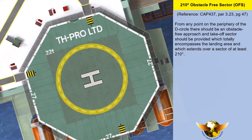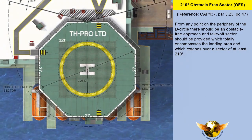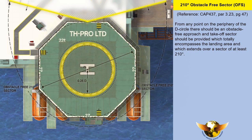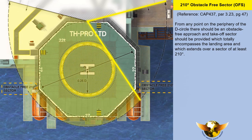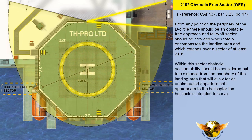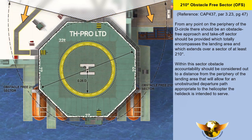From any point on the periphery of the D-Circle, there should be an obstacle-free approach and takeoff sector provided, which totally encompasses the landing area and which extends over a sector of at least 210 degrees. Within this sector, obstacle accountability should be considered out to a distance from the periphery of the landing area that will allow for an unobstructed departure path appropriate to the helicopter the helideck is intended to serve.